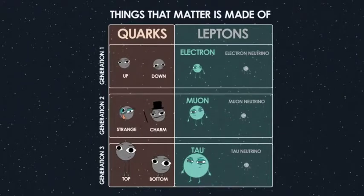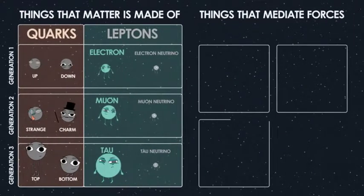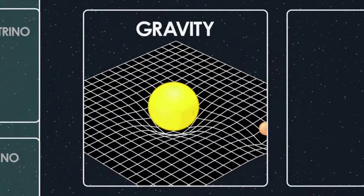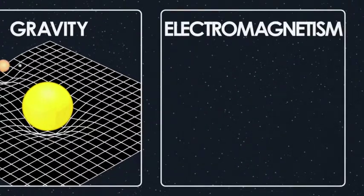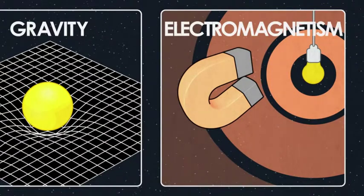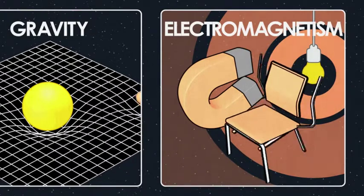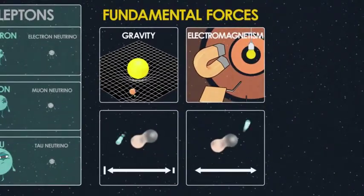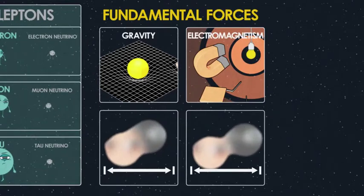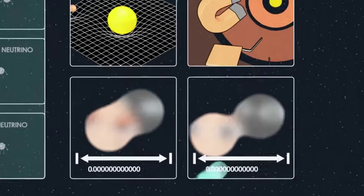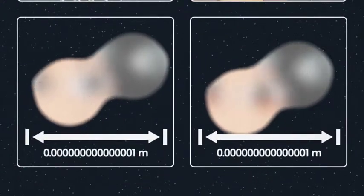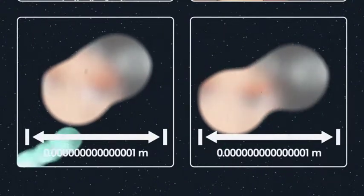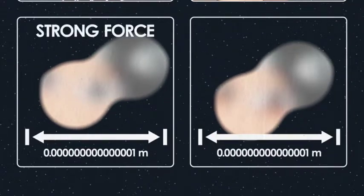So we've got six quarks and six leptons. But those are only the things matter is made of — we still have to talk about the particles that mediate the forces between matter. There are four known fundamental forces: gravity, electromagnetism — which holds atoms together and is responsible for light, magnets, and electricity — and two other forces that are very short range, only acting over the width of an atomic nucleus, about a millionth of a billionth of a meter.